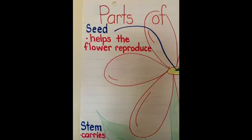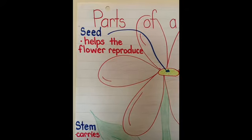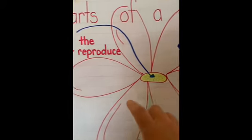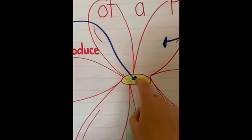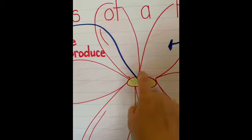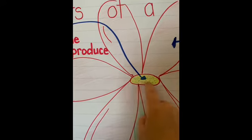And last we have the seed. The seeds are located right in the center. So now that we know the parts of the plant,